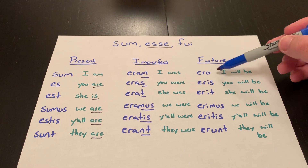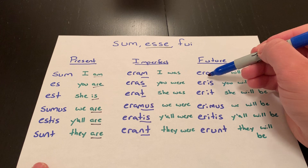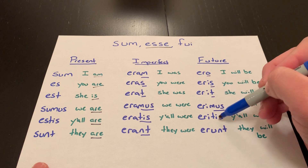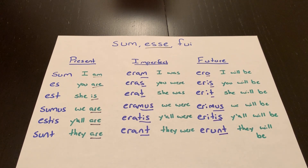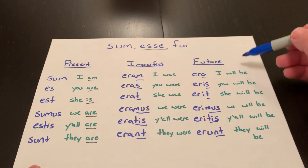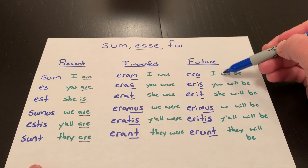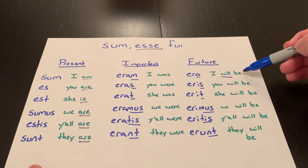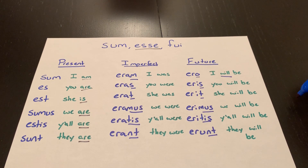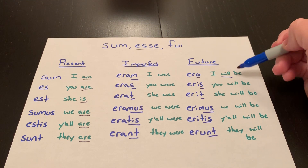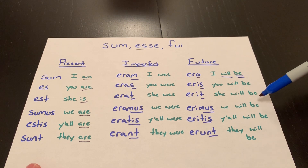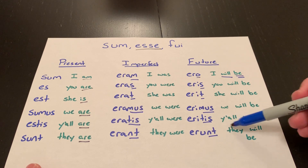The future is also irregular, but there's a pattern. ERI appears in many of the forms, and you also notice the personal endings O, S, T, MUS, TIS, NT. That can at least tell you who's doing the action. When translating, include the future marker in English — 'will' — but also don't forget to put the verb 'to be.' ERO doesn't mean 'I will'; it means 'I will be.' Put an adjective after it: 'I will happy' doesn't make sense, but 'I will be happy' does. So: I will be, you will be, she will be, we will be, y'all will be, they will be.